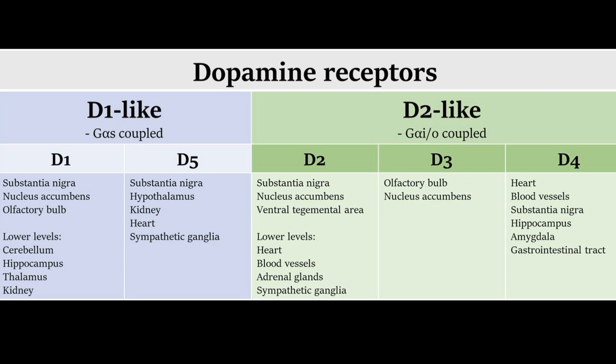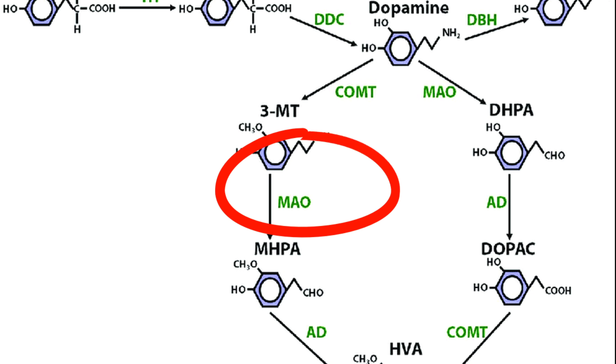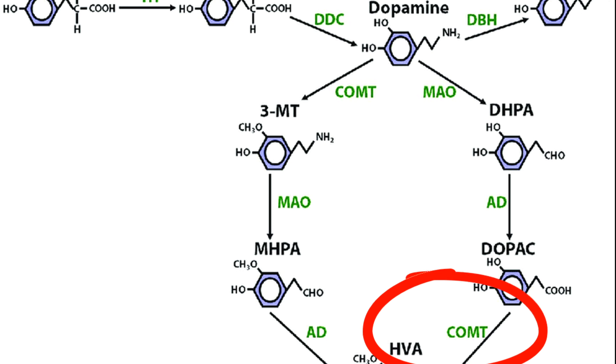The metabolism of dopamine is equally important. Enzymes like monoamine oxidase or MAO and catechol-O-methyltransferase or COMT break it down. This ensures that dopamine levels remain balanced. Imbalances can lead to serious health issues.